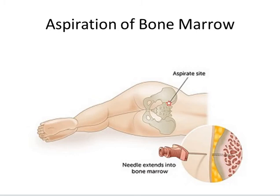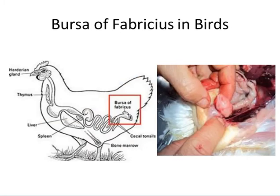Unlike B lymphocytes, T lymphocytes do not complete their maturation in the bone marrow. T lymphocyte precursors need to leave the bone marrow and travel to the unique microenvironments provided by the thymus, another primary lymphoid organ, in order to develop into functional cells. In the case of birds, a specialized organ known as the bursa of Fabricius is responsible for the maturation of B cells.